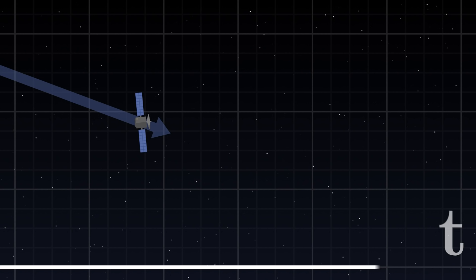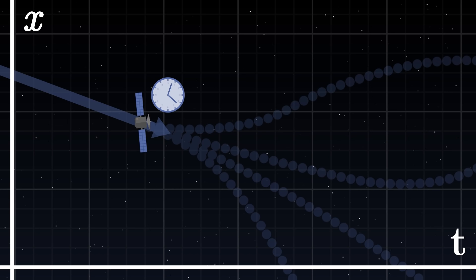To describe its trajectory, we provide our space-time with two coordinates: time, t, measured on our clock, and space, x, which measures the position of the satellite along an axis. As its proper time passes, the satellite will evolve along these two coordinates.